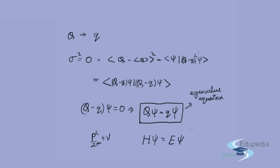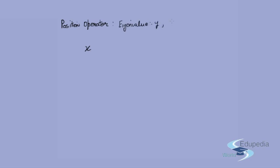Now we look at eigenvalue equations for two specific and commonly used operators: the position operator and the momentum operator. For one-dimensional motion, the position operator simply multiplies the function by x. Let the eigenvalue be y and the eigenfunction be g_y(x). The eigenvalue equation becomes x · g_y(x) = y · g_y(x).